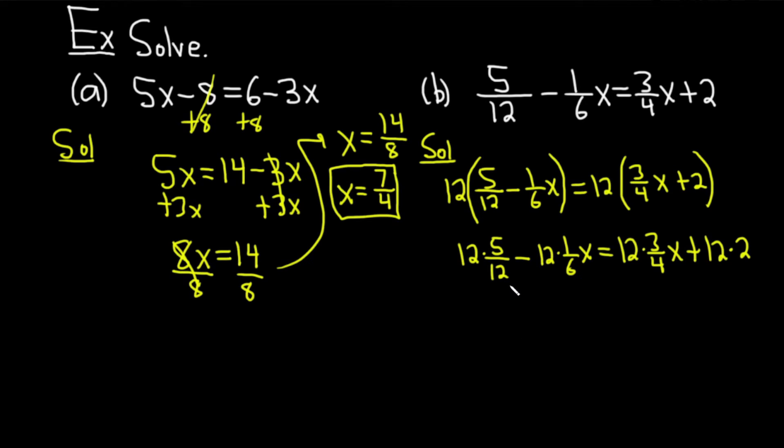I'm going to show this step, but then I'll show you how to skip it. If you wanted to show the step, it'd be (12 × 5/12) - (12 × 1/6)x. You basically put the 12 in front of each of the terms—it's called distributing. On the right-hand side, you get (12 × 3/4)x + (12 × 2). These cancel, so you get 5 - 2x because 6 goes into 12 twice. This equals 9x plus 24, because 4 goes into 12 three times and 3 times 3 is 9.